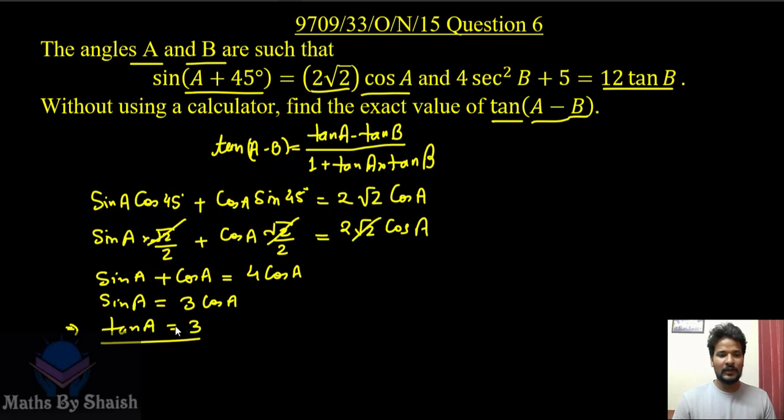That is why we got sin A upon cos A, that is tan A, is going to be 3. From here we got tan A as 3 by dividing this equation by cos A.